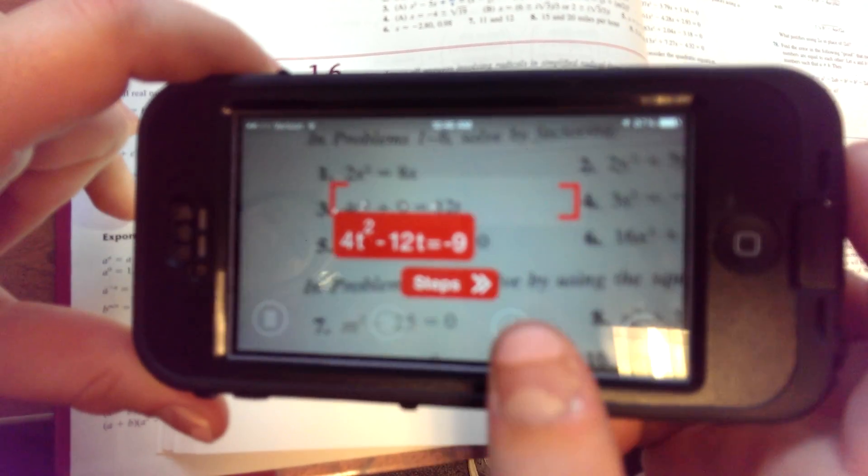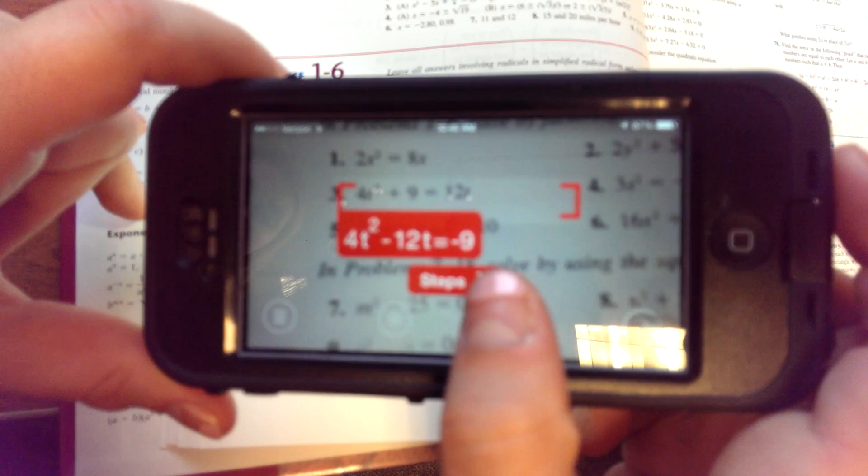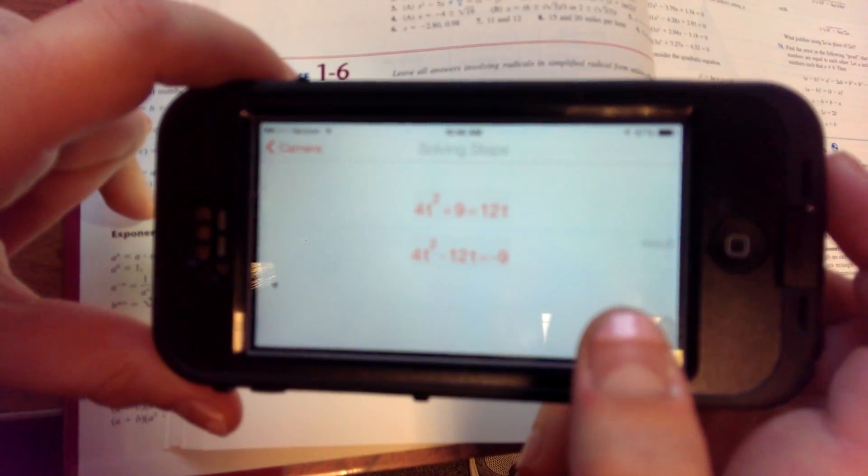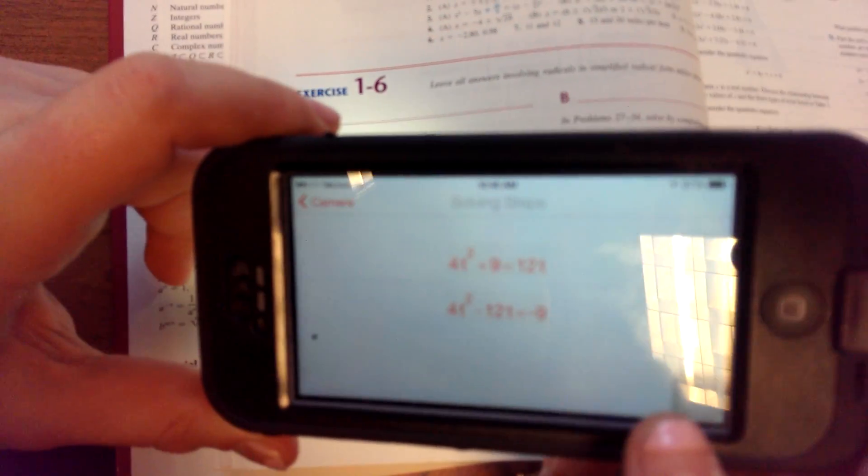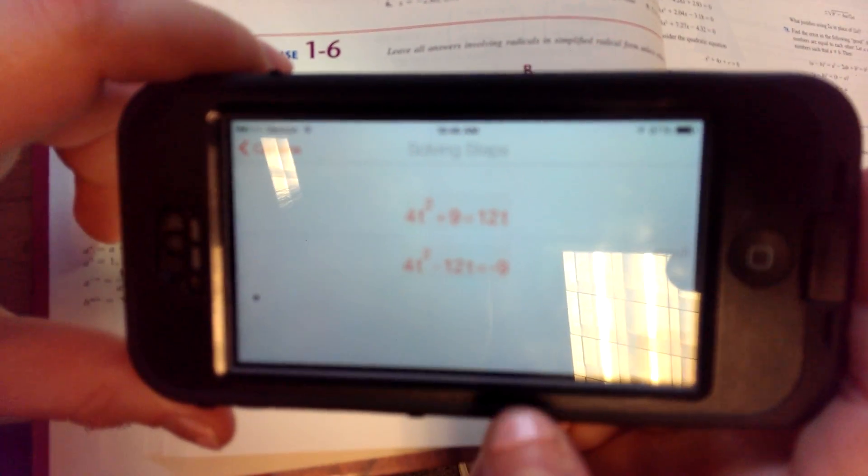What if you click steps? So, it seems like it just... you know, move the negative 9 over there and the 12t over here. Brilliant.